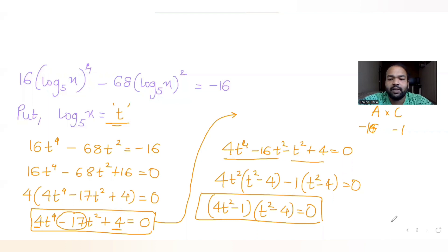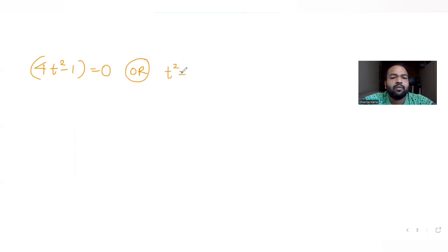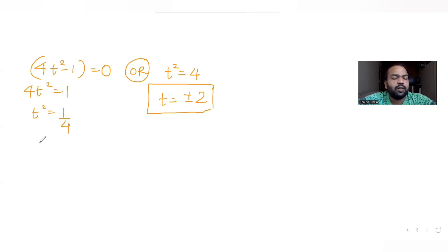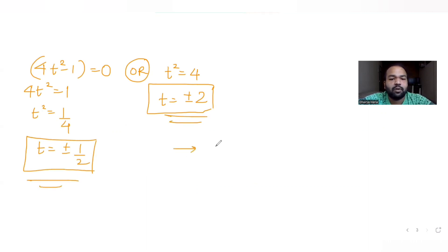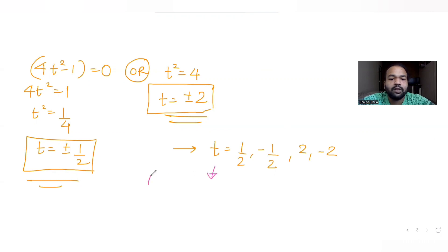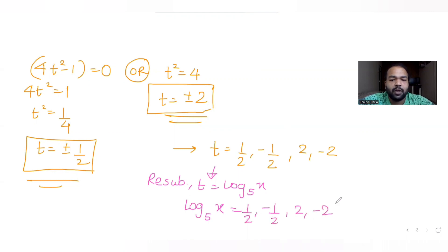Solving each factor: from t² minus 4 = 0, t = ±2; from 4t² minus 1 = 0, t² = 1/4, so t = ±½. I now have four values of t: ½, −½, 2, −2. Since I need x, I resubstitute t = log x to the base 5, so log x to the base 5 equals ½, −½, 2, or −2.